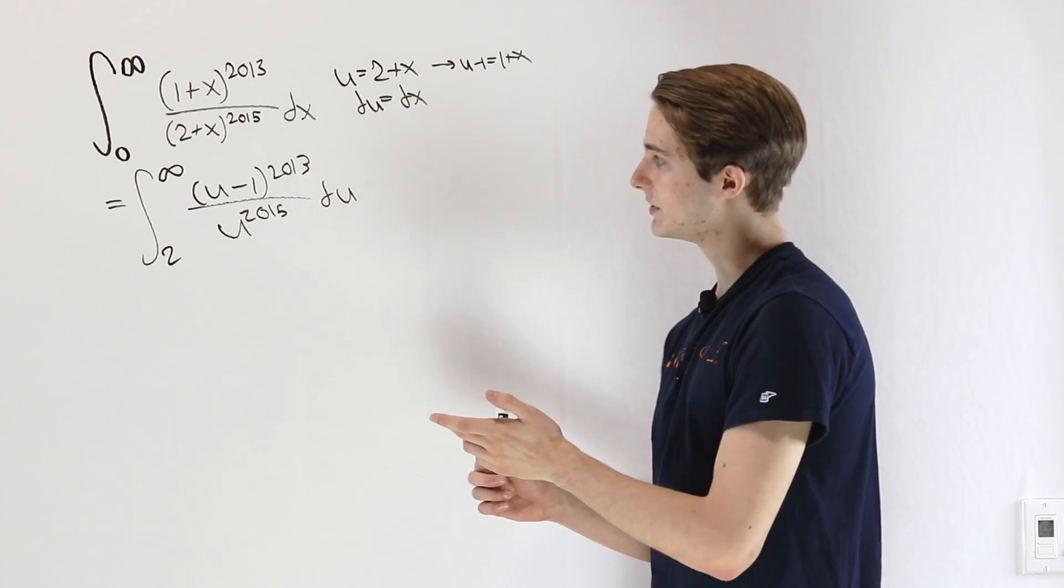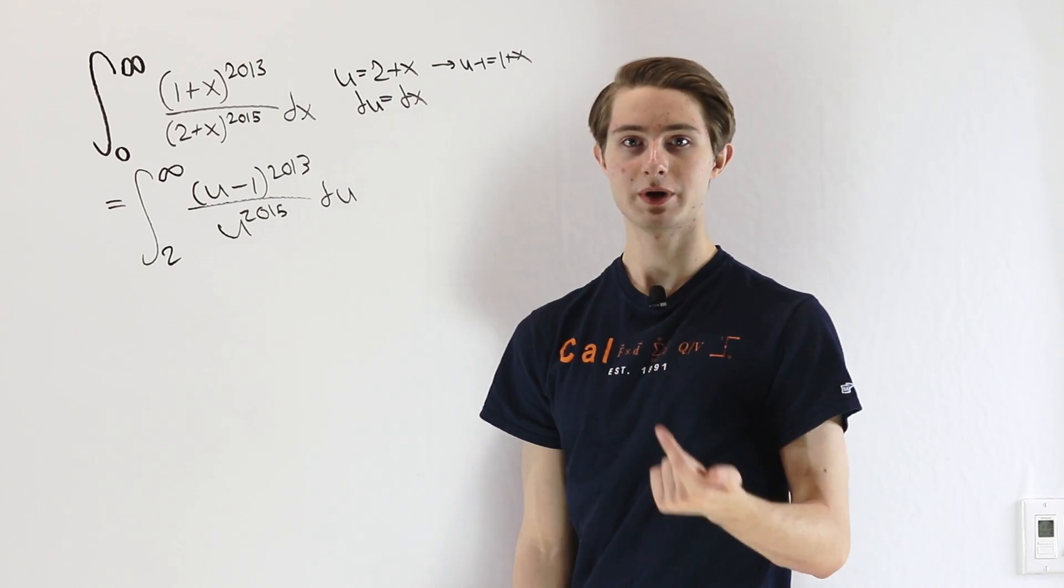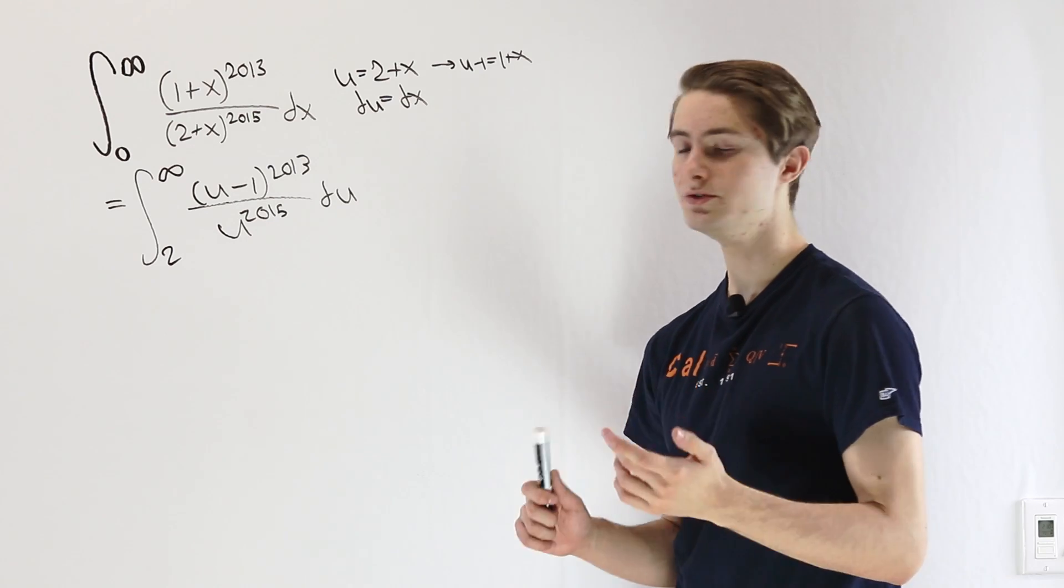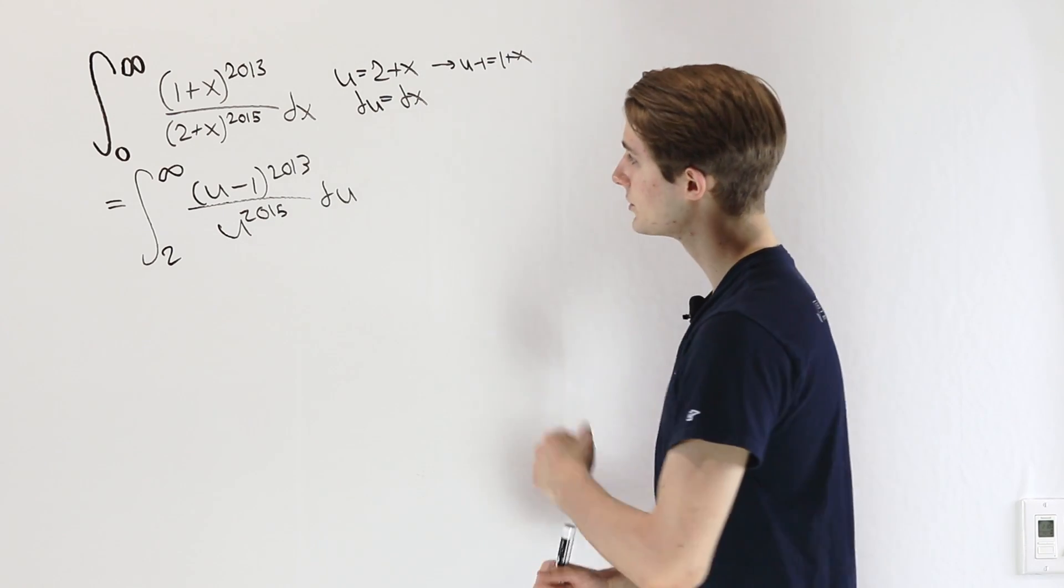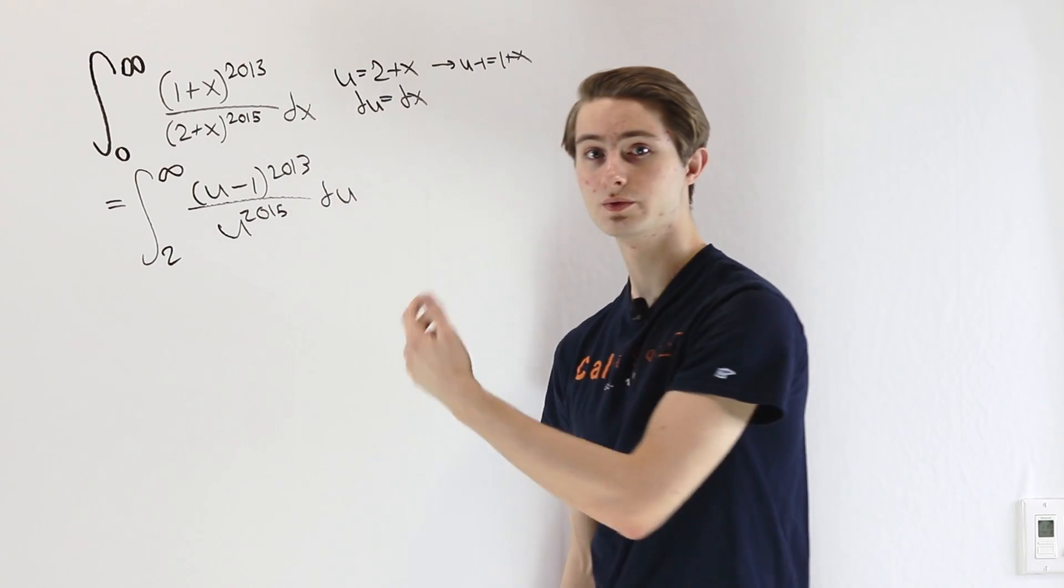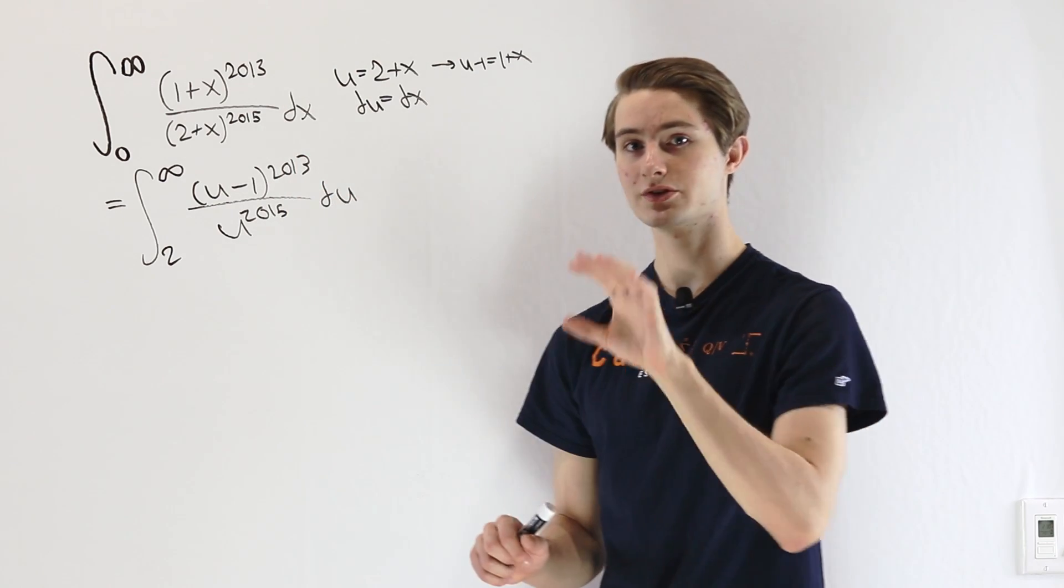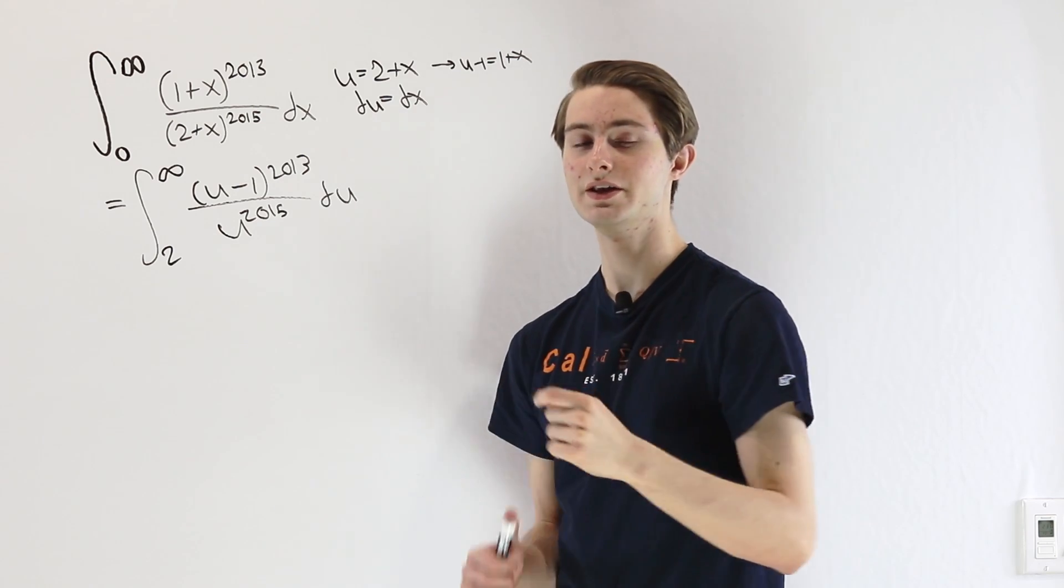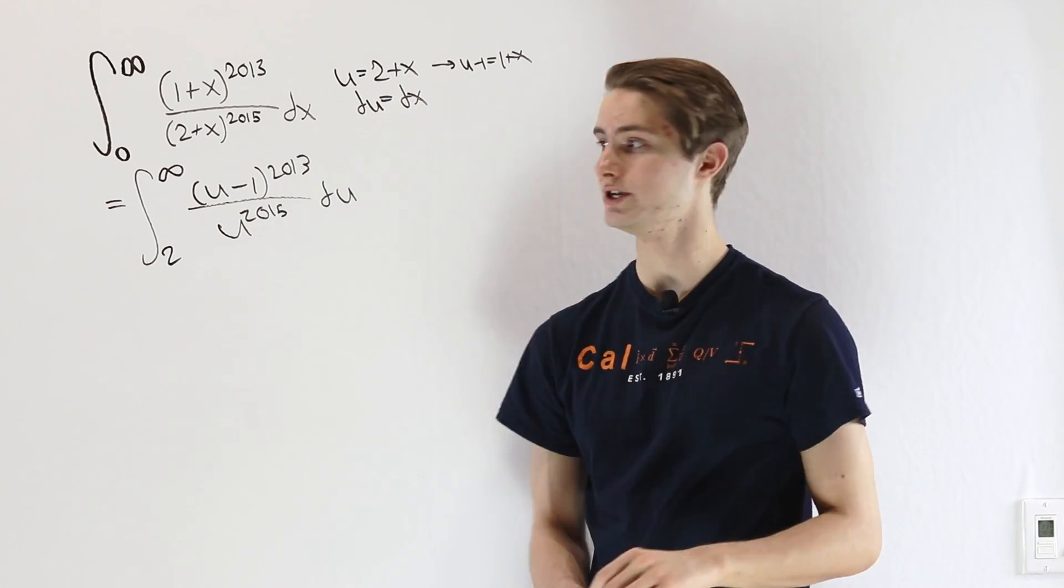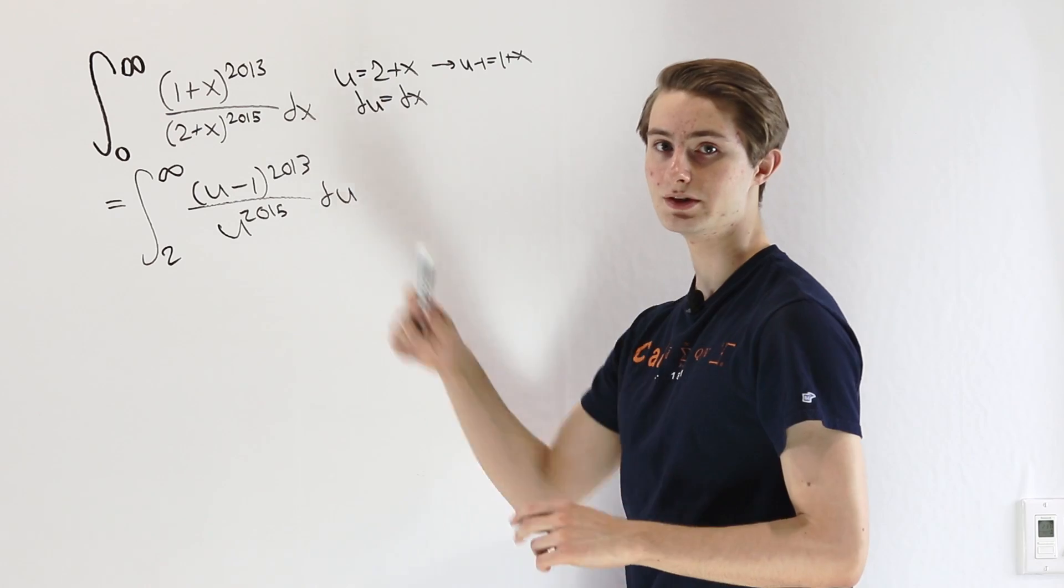So where can we go from here? Well, one of the most powerful integration techniques that we have is u-substitution. And u-substitution is especially useful when we're looking at situations where we have really gigantic powers. Because no matter what's inside of that gigantic power, if we can substitute it, then it just becomes a power rule situation. And it doesn't matter how big these numbers are.